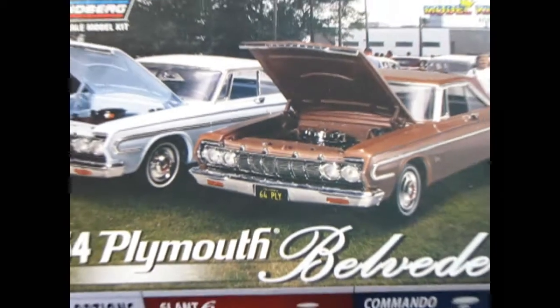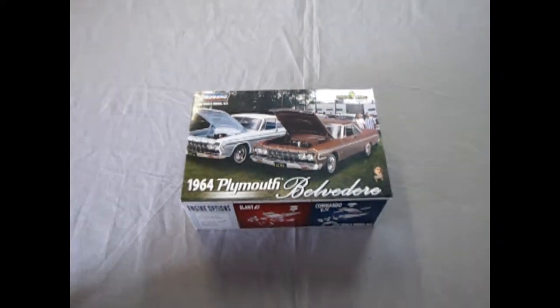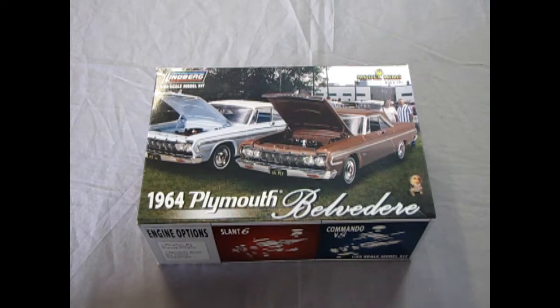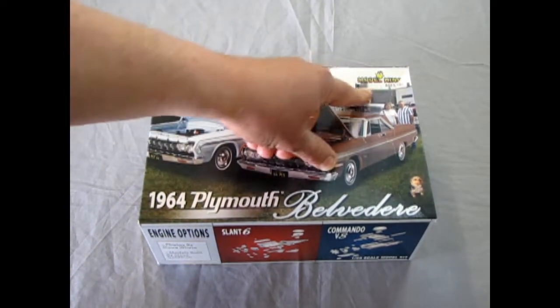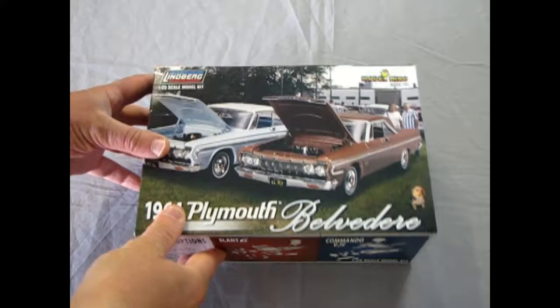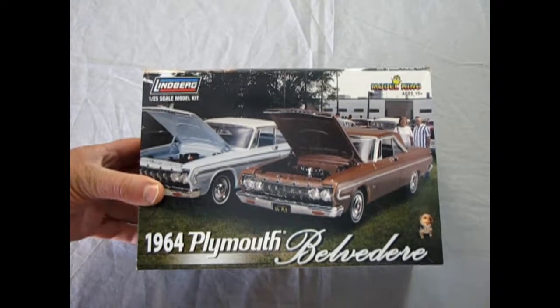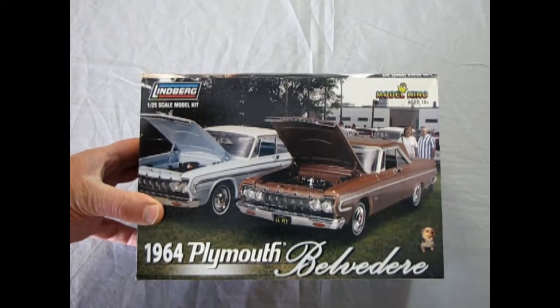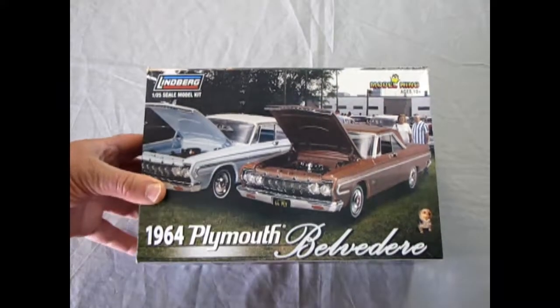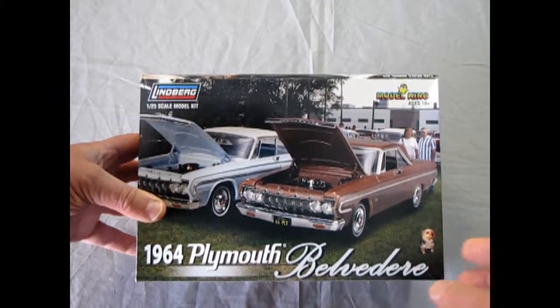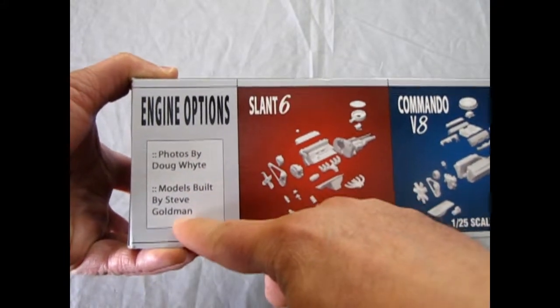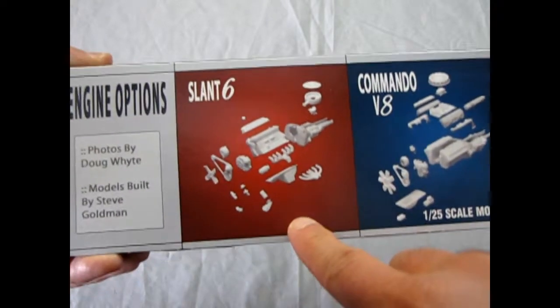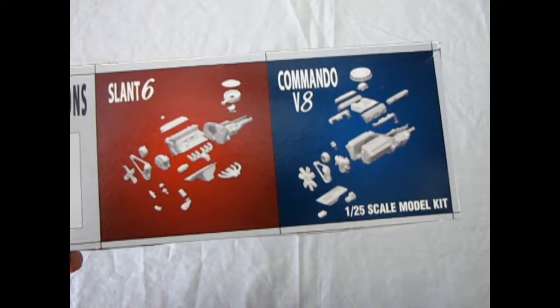Last week we were looking at the Lindbergh Dodge 330, and today we're going to be looking at the 1964 Plymouth Belvedere, again by Lindbergh and hosted by Model King. Model King makes a whole line of products using different manufacturer's molds. They'll do a run of the kits that are not in production currently. So as we turn this over here, you've got photos by Doug White, models built by Steve Goldman. They show the Slant 6 and the Commando V8.